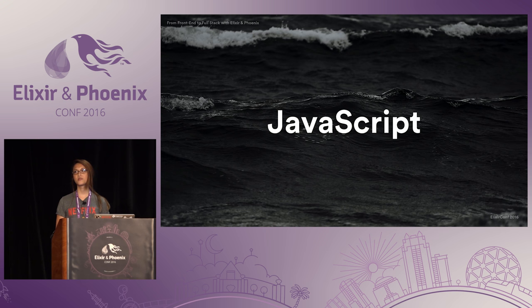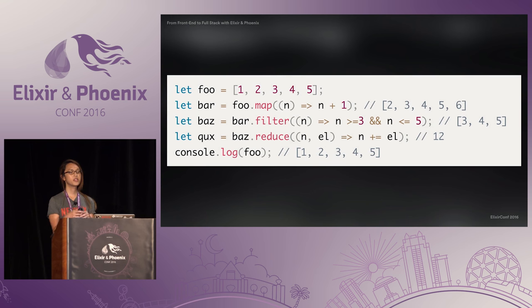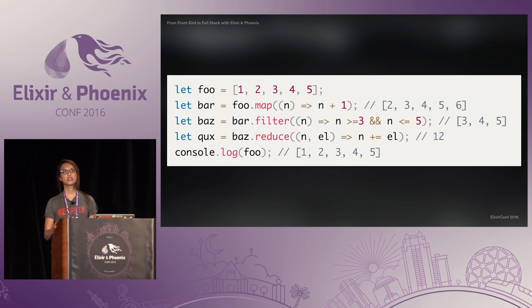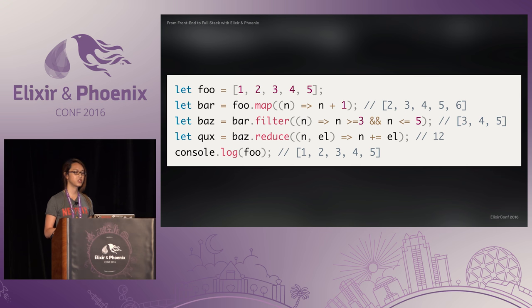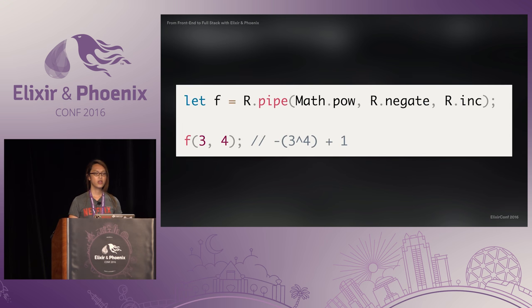I started learning JavaScript and especially enjoyed the functional side of things. Being able to use map, filter, and reduce is really nice. In JavaScript, these all return new arrays, so you don't mutate the original. JavaScript is actually a pretty nice language to learn functional programming — functions are first class, so you can write higher-order functions pretty easily, and you can also make use of lambdas and closures. I also explored libraries like Ramda, which allow for more functional approaches in JavaScript.